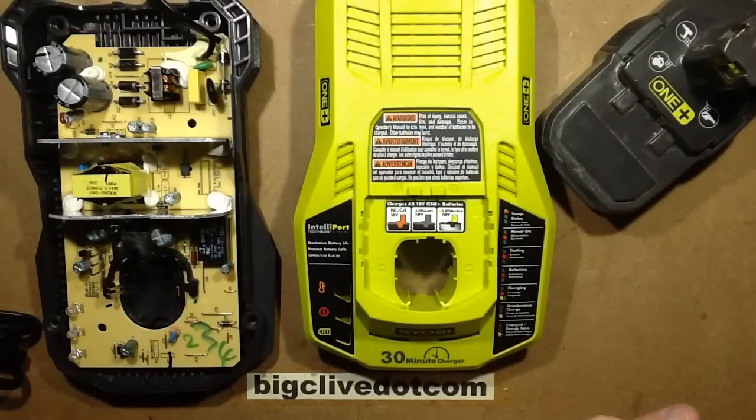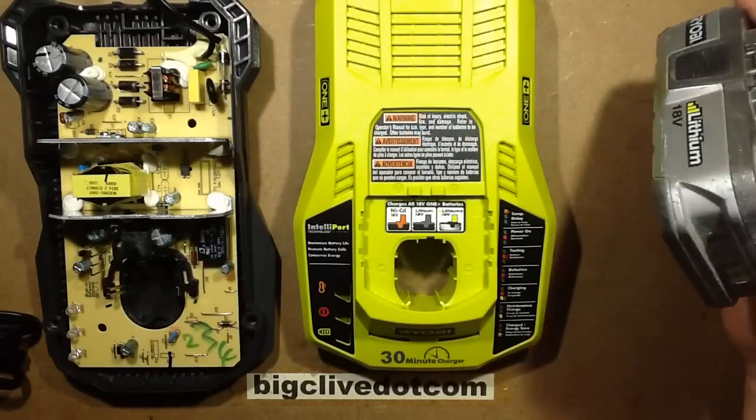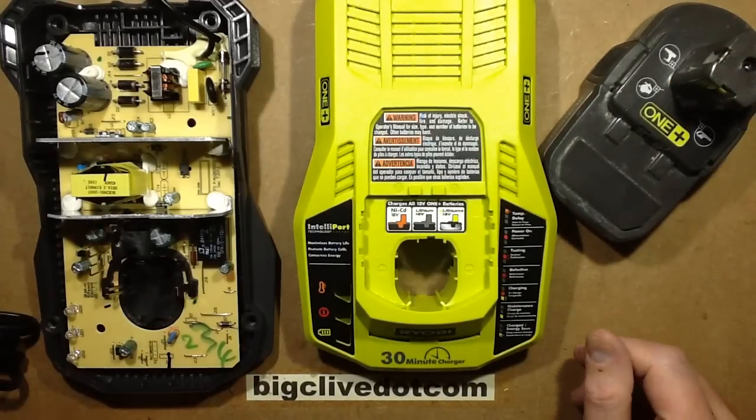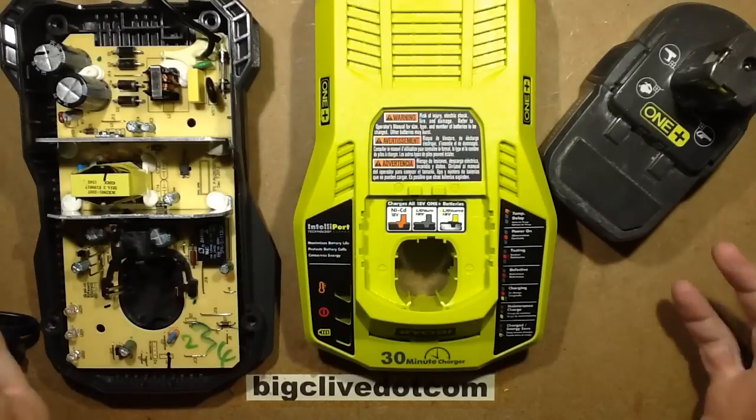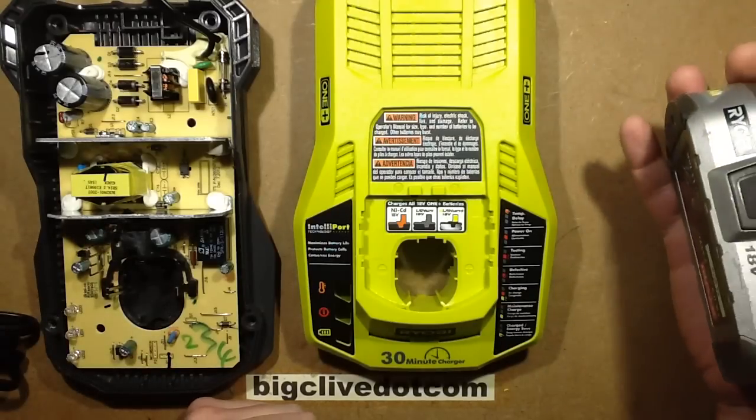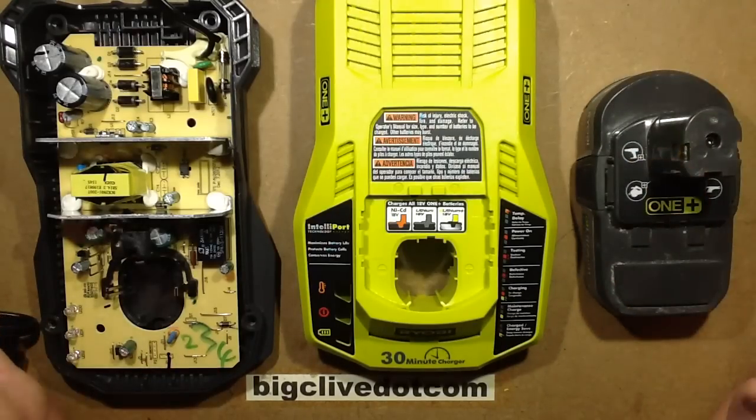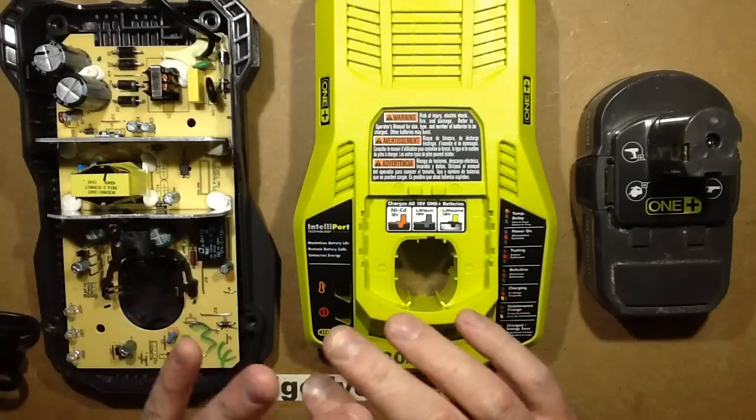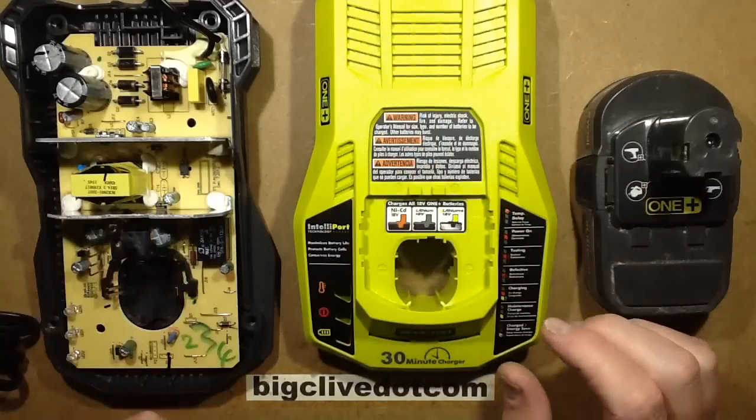You'll notice that many YouTube technical channels use the Ryobi One Plus system for power tools. This isn't because we get sponsored by Ryobi in any way, it's just because it's a very good system. It uses one battery for a whole range of power tools including impact drivers, SDS drills, angle grinders, circular saws, and hedge trimmers. It's very good.